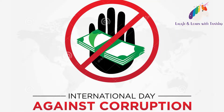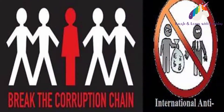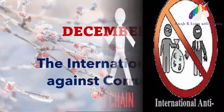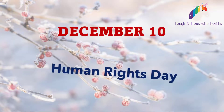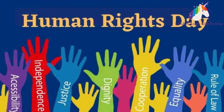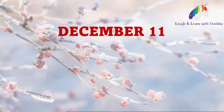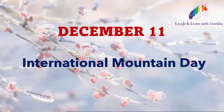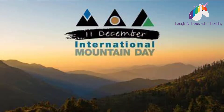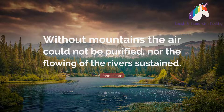December 9th: The International Day Against Corruption. This day is observed annually to raise public awareness against corruption and to reinforce the importance of a corruption-free society. December 10th: Human Rights Day. This day is commemorated to ensure that each and every individual is benefited with their rights and freedom. December 11th: International Mountain Day, celebrated to encourage the international community to highlight the importance of sustainable mountain development.